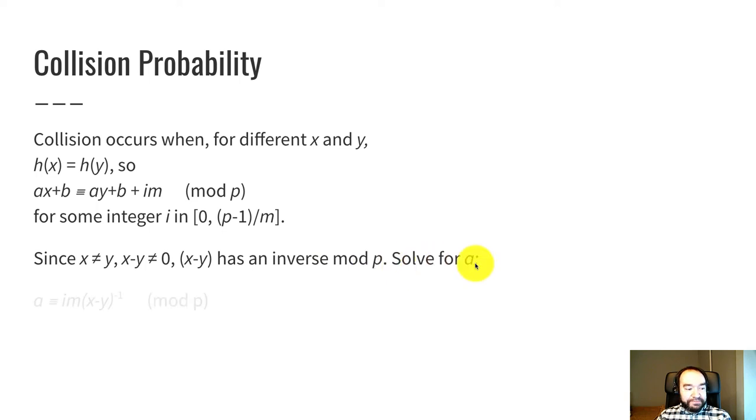And that means that the difference X minus Y has an inverse in modular arithmetic by P. So if we solve for A, so rewrite this equation in terms of A, then A is congruent to IM times X minus Y inverse mod P.